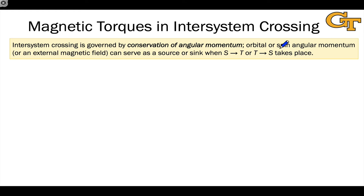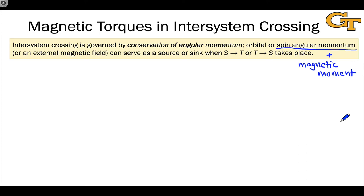First, we need to say two things about quantum spin. The first is that spin is a kind of angular momentum, and so it is governed by the conservation of momentum. If a change in spin angular momentum takes place, we need to have a source or sink of momentum somewhere else to account for that change.